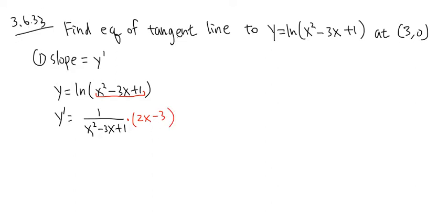Now we are going to put things nicely together. Put this on the top: 2x minus 3 over x squared minus 3x plus 1.